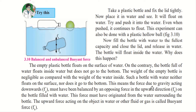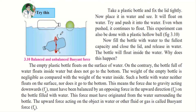This means the force due to gravity acting downwards — Fg — must be balanced by an opposing force in the upward direction — Fb — on the bottle filled with water. The force of gravity is balanced by Fb. This Fb force must have originated from the water surrounding the bottle, as the surrounding water is acting on the bottle and creating this upward force.